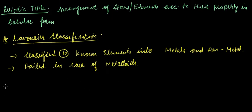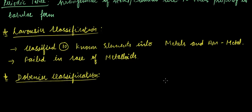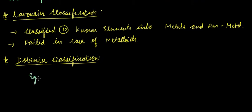Another scientist who classified the elements was Döbereiner. In Döbereiner's classification, he arranged elements in a group of three elements having similar properties, and found that the atomic mass of the middle element of each triad was almost equal to the arithmetic mean of the atomic mass of the first and last element of the triad. For example, one triad contains Li, Na, and K.